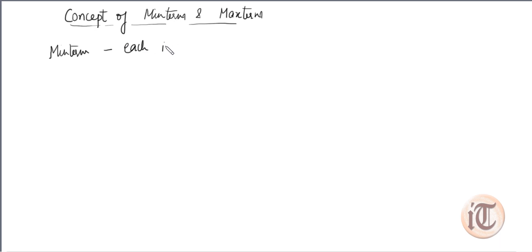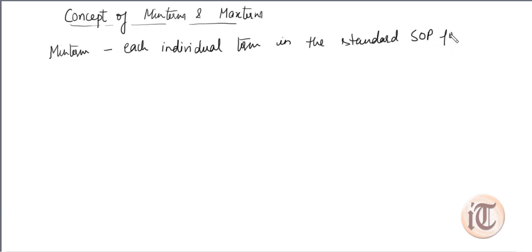Today we are going to discuss the concept of min term and max term. In the previous lecture we already discussed SOP, POS, standard SOP, and standard POS. Min term is each individual term in the standard SOP form. Standard SOP is a SOP form in which each literal is present in each product term.